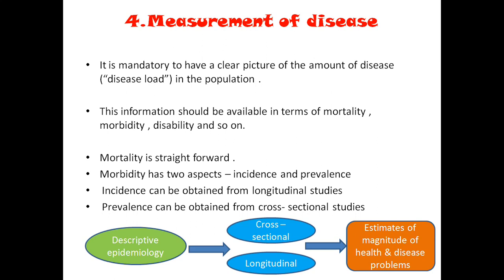We need to measure the disease based on these tools of epidemiology. Usually we calculate incidence and prevalence. Incidence is the new cases, and prevalence is the total cases. Prevalence means what percentage of the people are affected by that disease. Incidence is how fast it is spreading. In an epidemic, we need to find out the incidence. In chronic diseases like cancer and heart disease, we need to find out the prevalence.